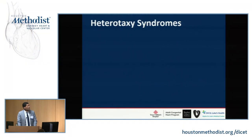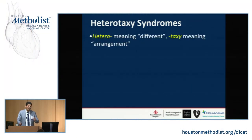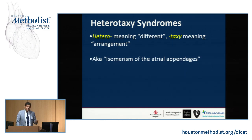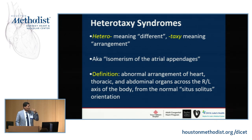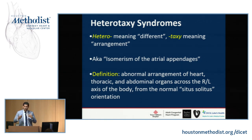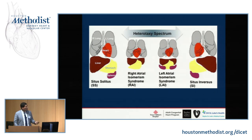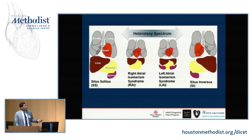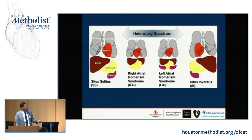A few words about heterotaxy syndrome. 'Hetero' meaning different, 'taxy' meaning arrangement. It's also known as isomerism of the atrial appendages. Basically, heart, thorax, and abdominal organs can be inverted across the right-left axis of the body. In right atrial isomerism, you have two right atria and abnormal lungs. In left atrial isomerism, there's duplication of the left atria. In complete situs inversus, everything is inverted — dextrocardia, liver on the opposite side, stomach on the right, and spleen on the right.